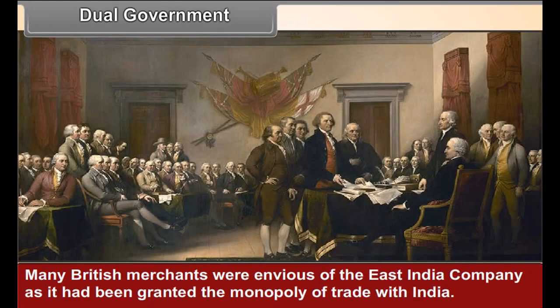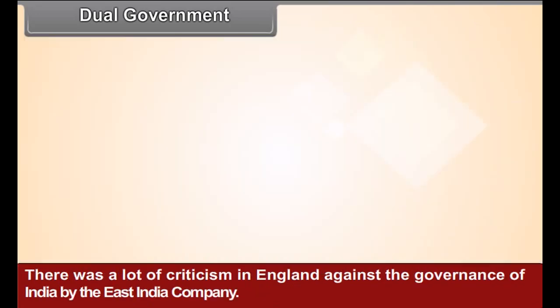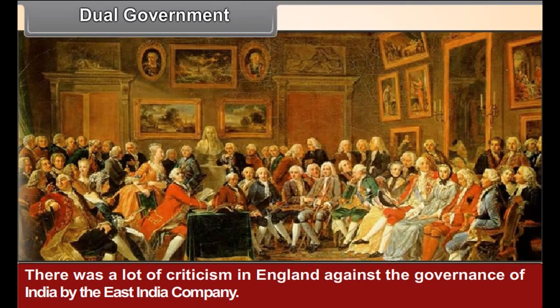Many British merchants were envious of the East India Company as it had been granted the monopoly of trade with India. There was a lot of criticism in England against the governance of India by the East India Company. The British Parliament, therefore, passed certain important acts to regulate the company's administration in India.